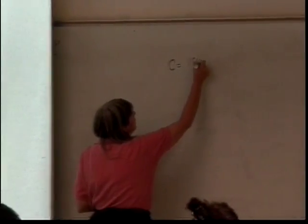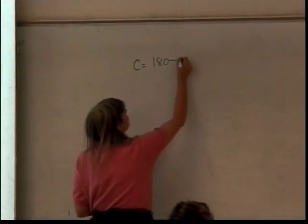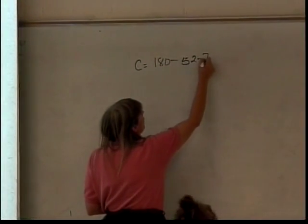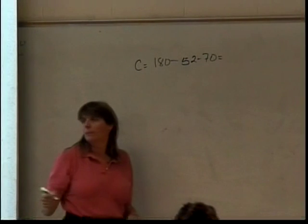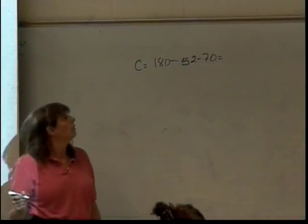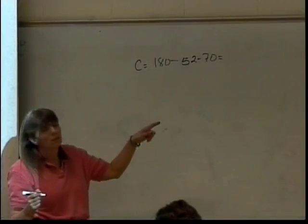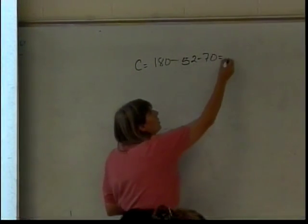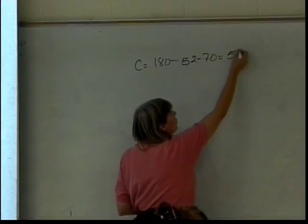So angle C is going to be 180 minus, what do we have, 52 minus 70, which is what? So that's 60, 58. So angle C is 58.